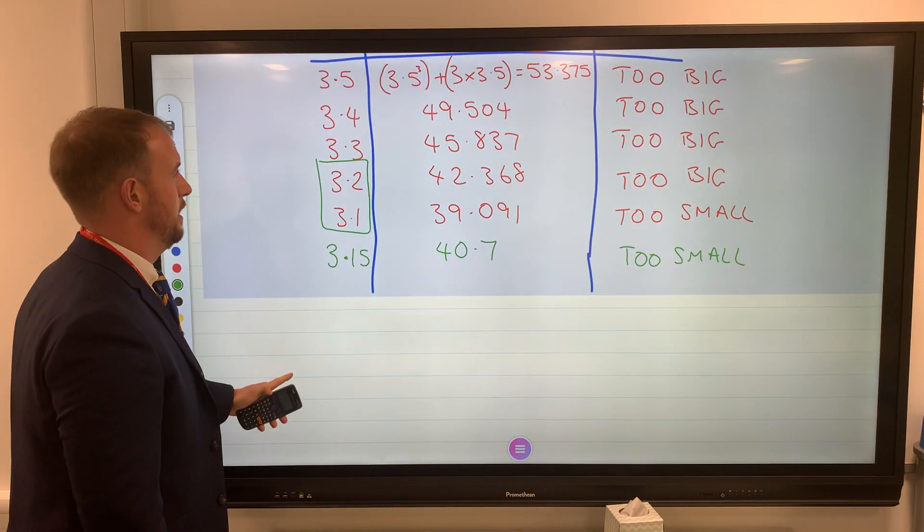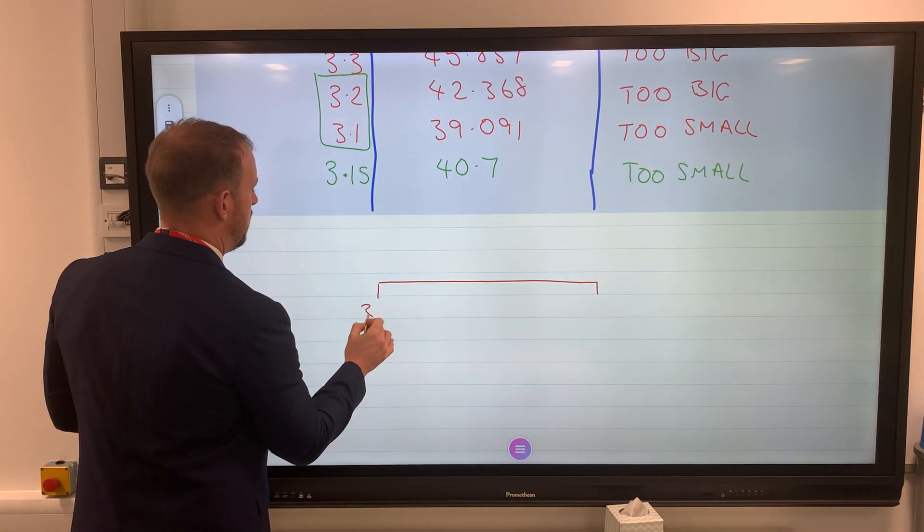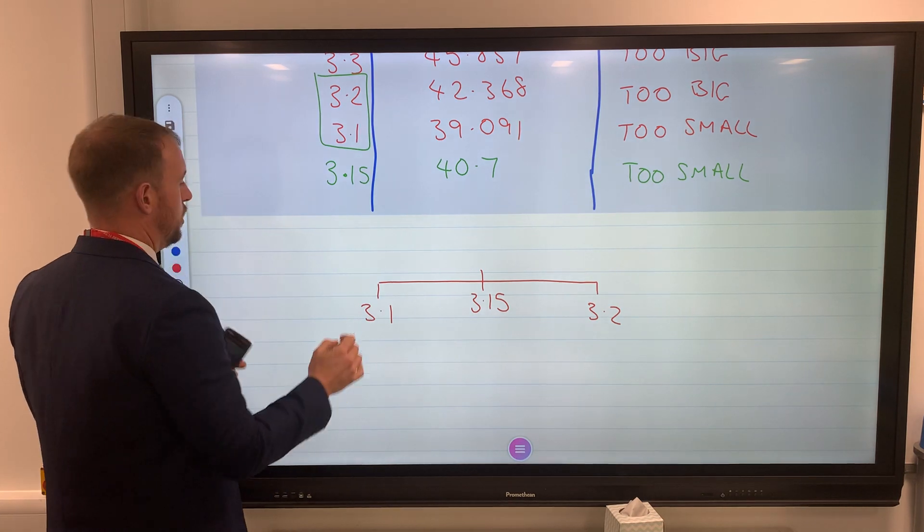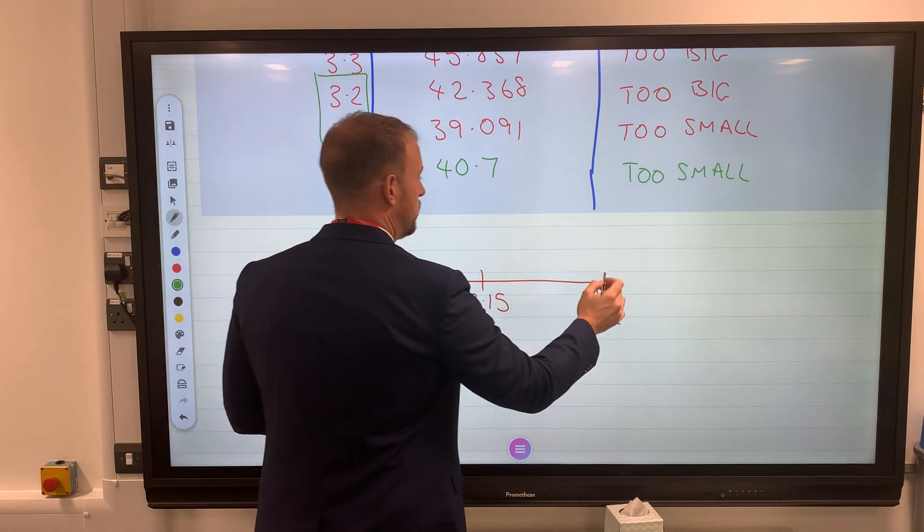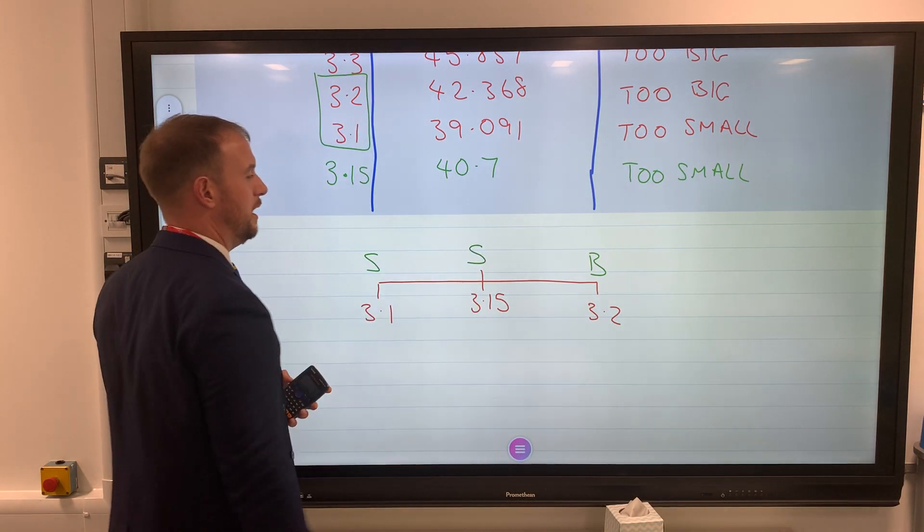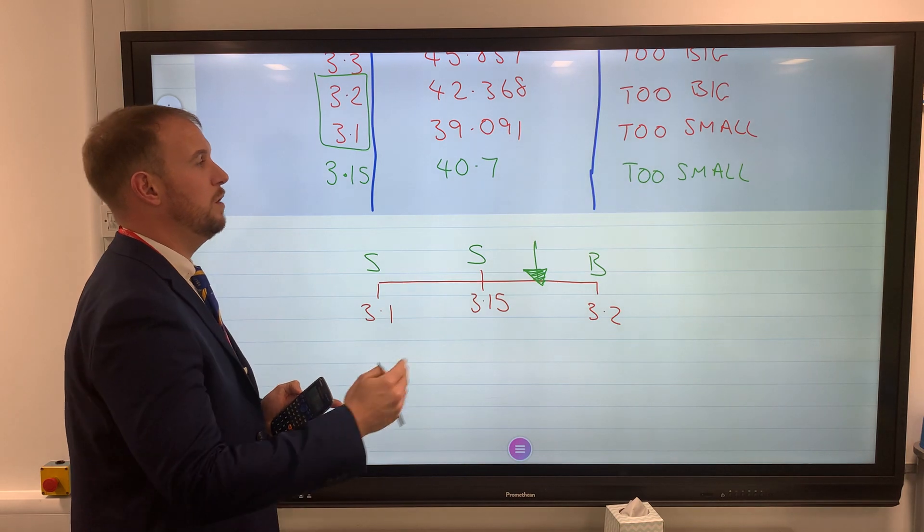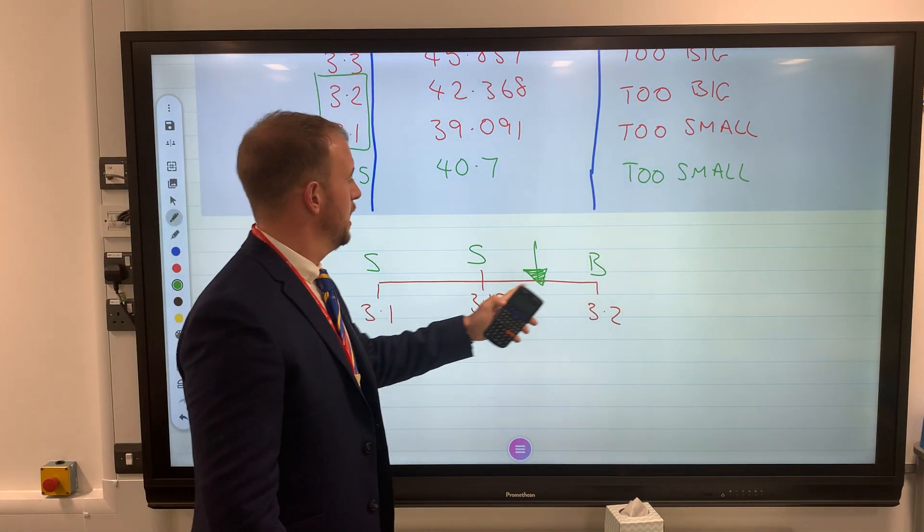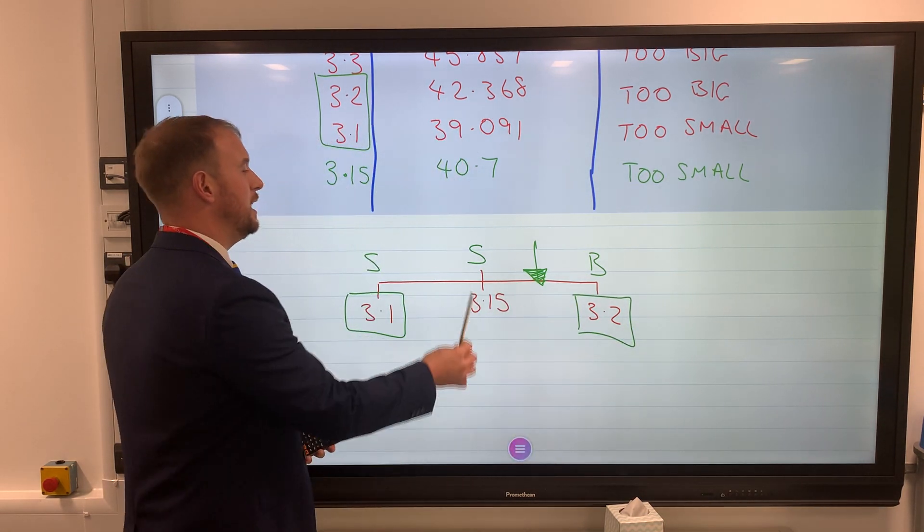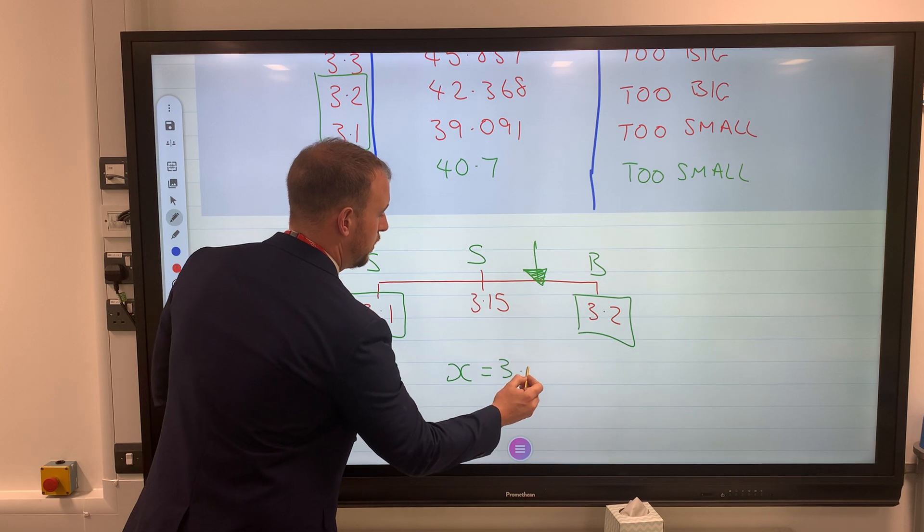I'm going to use a number line. We're trying to get to 41. So we have 3.1, 3.15, and 3.2. Now 3.1 was too small, 3.2 is too big, 3.15 was too small as well, so our value has to be somewhere between there to make as close to 41 as possible. The question asks for one decimal place. Using this number line, we can clearly see it is closer to 3.2, so our answer is x = 3.2.